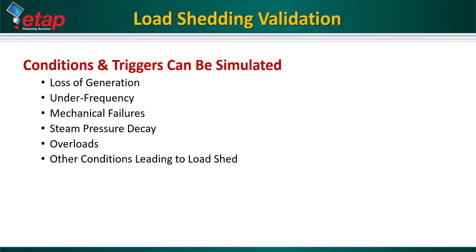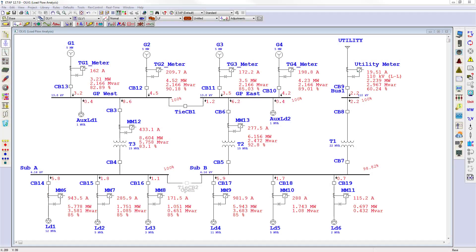The load shedding system supports engineers in validating results from ILS before implementing in the network, using real-time data as well as user-defined and simulated data. The validation process consists of simulating and analyzing items such as loss of generation, under-frequency, mechanical failures, steam pressure decay, overloads, and other conditions. Utilizing a simplified network representing an industrial facility with onsite generation tied to the utility, let's perform a validation study.